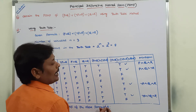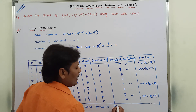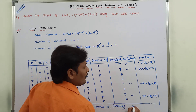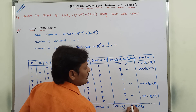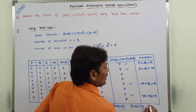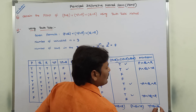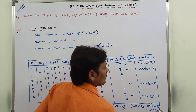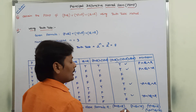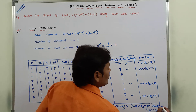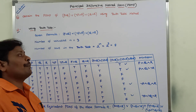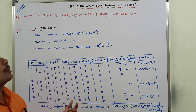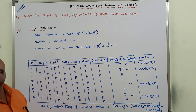The equivalent PDNF of the given formula is: (P∧Q∧R) ∨ (P∧Q∧¬R) ∨ (¬P∧Q∧R) ∨ (¬P∧¬Q∧R). These four min terms are connected by the OR connective. This is the equivalent PDNF for the given formula, and this is the procedure we have to follow for finding the equivalent PDNF.